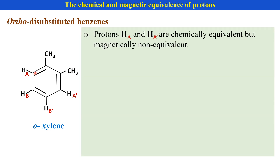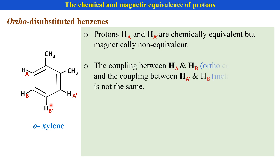The coupling of HA with HB is ortho coupling, and the coupling of HA with HB' is meta coupling, which is not the same. Therefore, HA and HA' are chemically equivalent but magnetically non-equivalent.